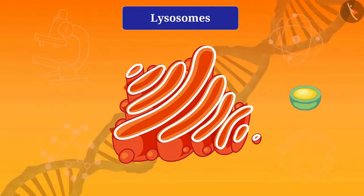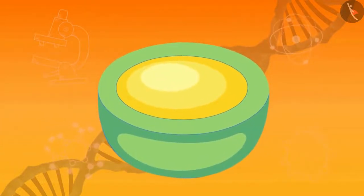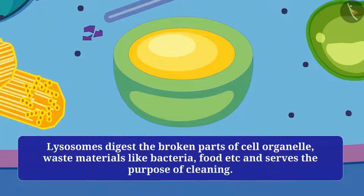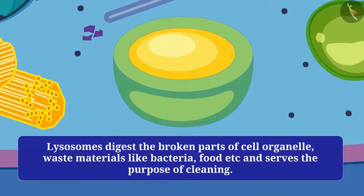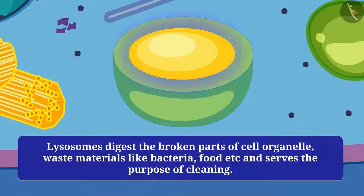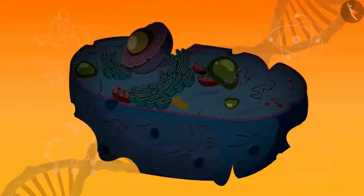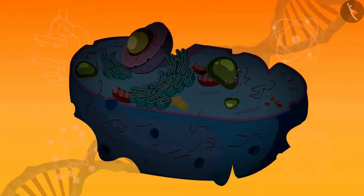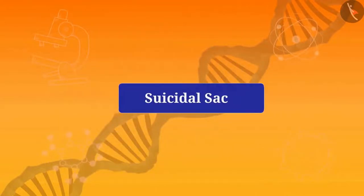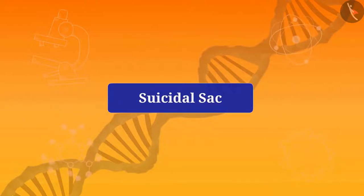Inside the cell, the broken parts of cell organelles and residual material coming from outside — such as bacteria and food — go into the lysosome, and its digestive enzymes break them into small pieces and cleanse the cell. When the cell is damaged or dead for any reason, the lysosomes burst and the enzymes digest their own cells. Hence lysosomes are called the suicidal sac of the cell — they work to keep the cell clean.